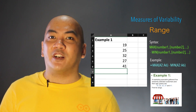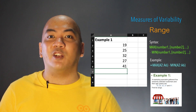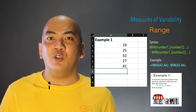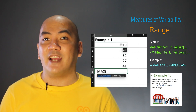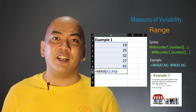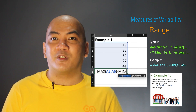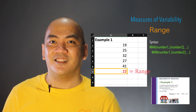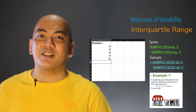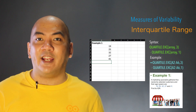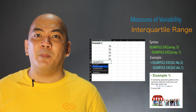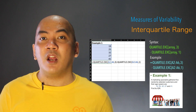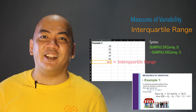Moving on, let's look at the measures of variability, starting with range. Since there is no range function in Excel, we may use the MAX function to find the highest observation and subtract the lowest observation using the MIN function. Similarly, there is no function for the interquartile range, so we look for Quartile 3 and subtract Quartile 1 to get the interquartile range.